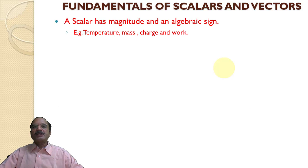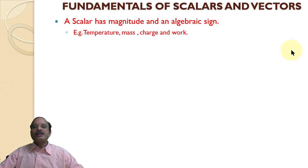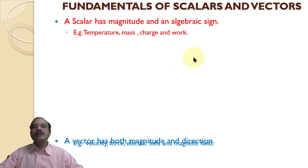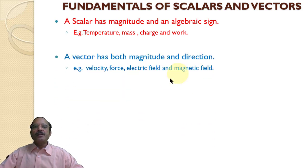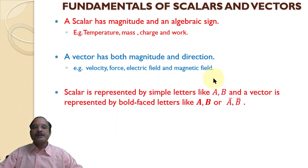Some basic concepts we will be discussing. A scalar has a magnitude and an algebraic sign. Practical examples are temperature, mass, charge, and work. Whereas a vector has both magnitude and direction. Practical examples are velocity, force, electric field, and magnetic field.